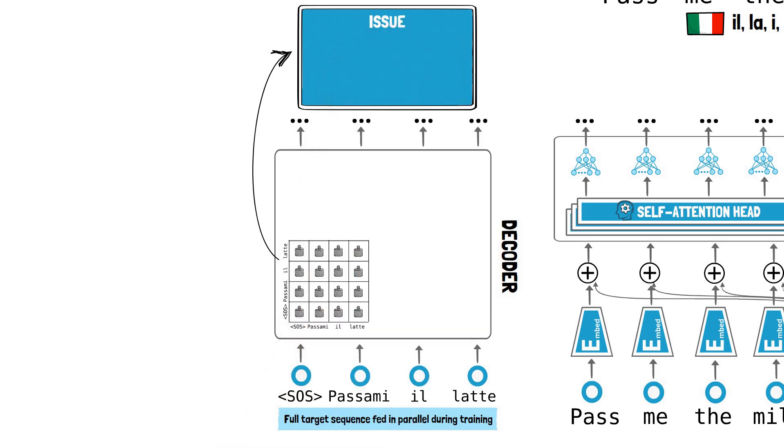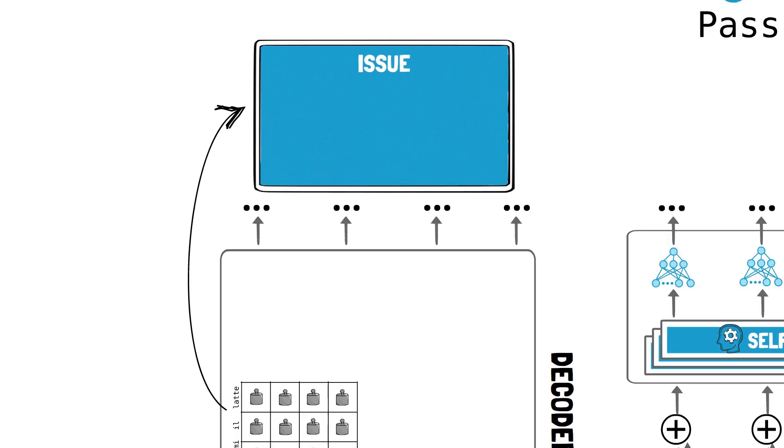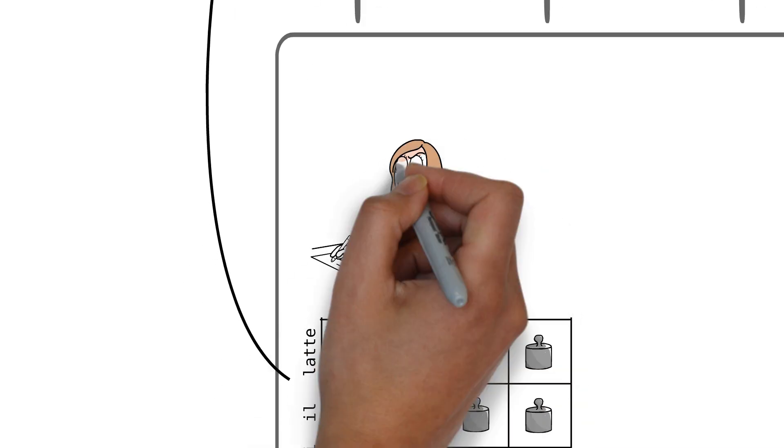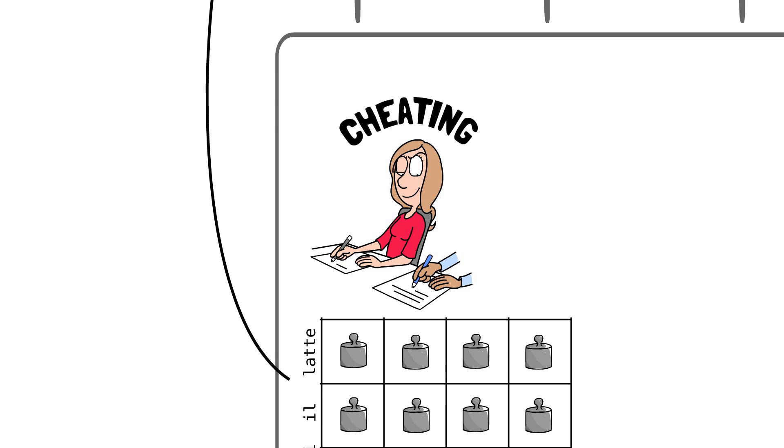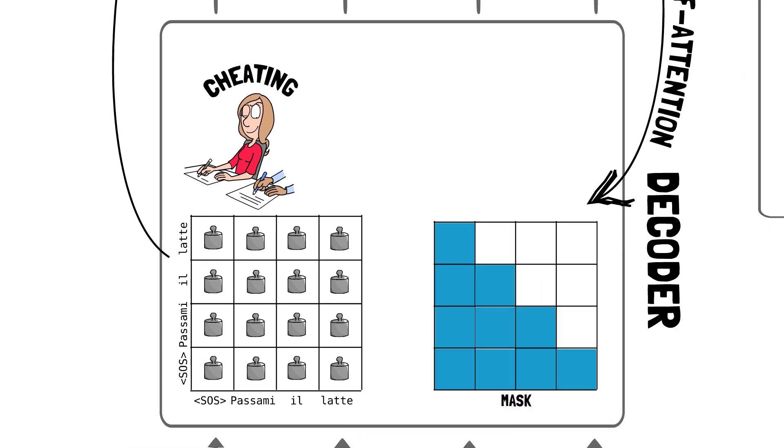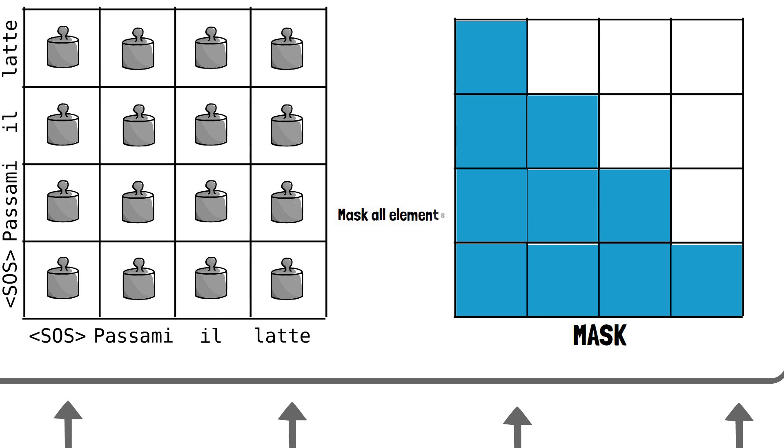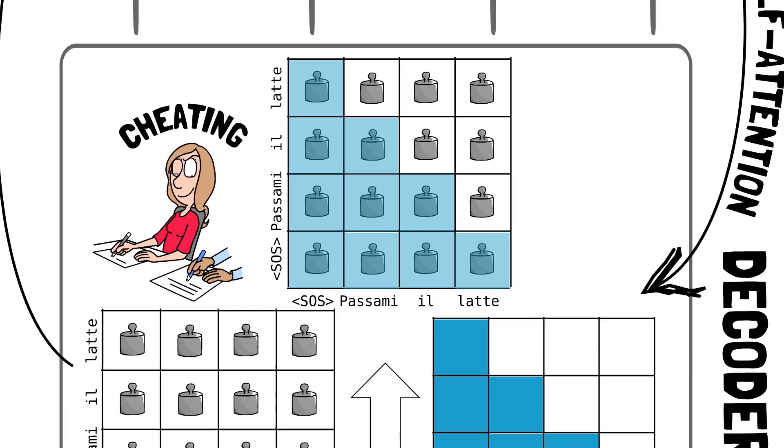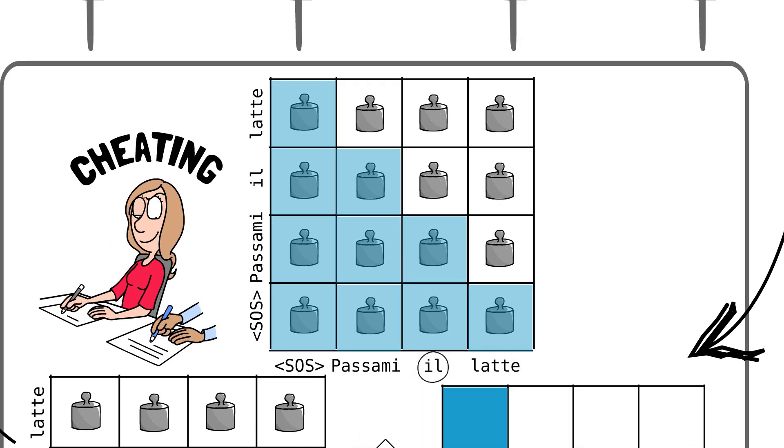If the decoder has unrestricted access to the entire target sequence, the attention matrix at each step would consider all target words, including those that come after the current word in the sequence. This scenario would allow the decoder to cheat by looking ahead at future words. To prevent this, we apply a mask during the self-attention computation. This mask effectively disables all elements above the diagonal of the matrix, ensuring that future words in the sequence are hidden from the current decoding step. For example, this ensures that when predicting the third token, the self-attention mechanism only looks at the previous two tokens, ignoring the rest of the column in the attention matrix.